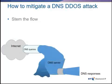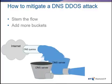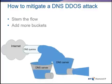The other method besides stemming the flow is to add more buckets — add more capacity on the processing side. If you're able to add more DNS servers, you can spread that flow out. Even though your inbound pipe is full, it's getting spread among a number of DNS servers. You may also have a load balancer in front. Having the ability to spread that flow of traffic over multiple servers means you're better able to respond to those queries that are legitimate.